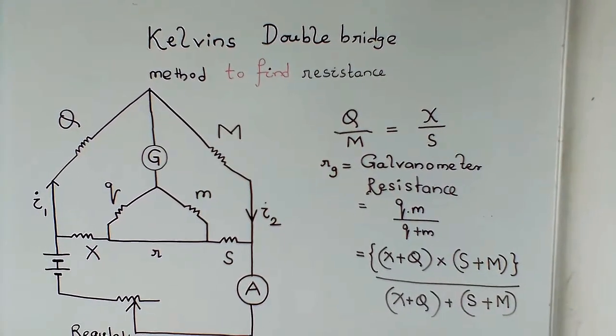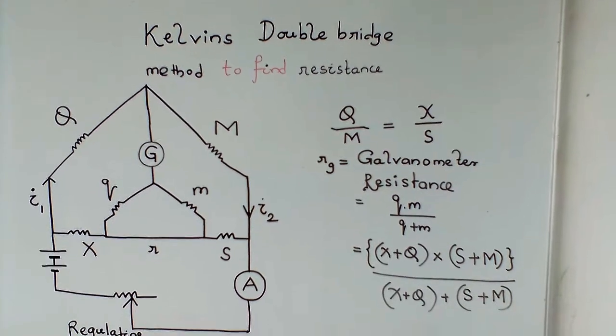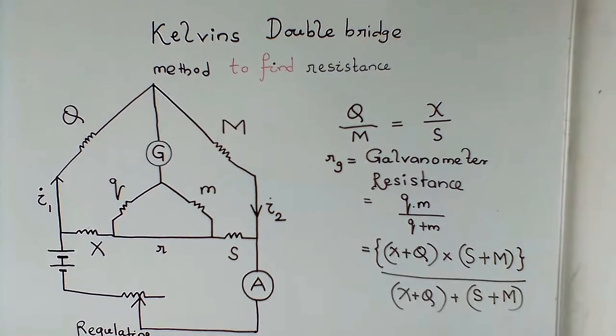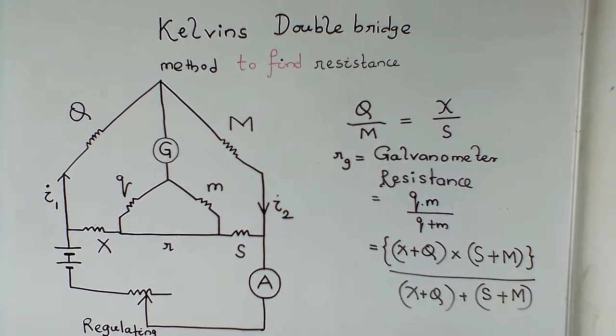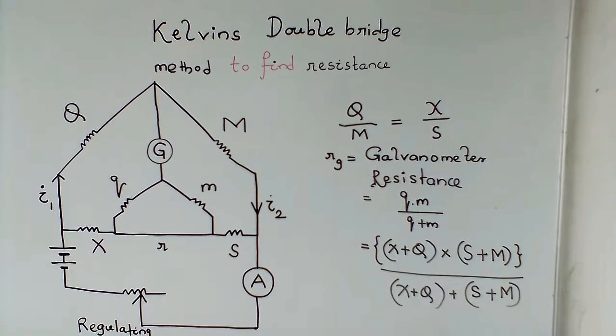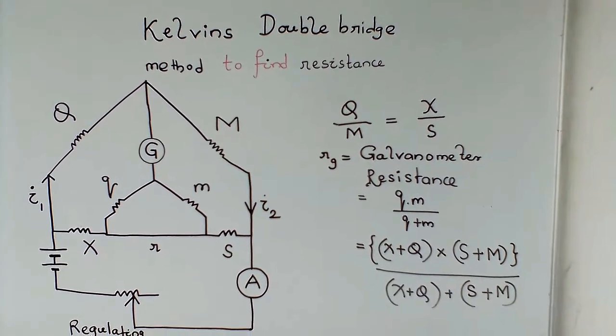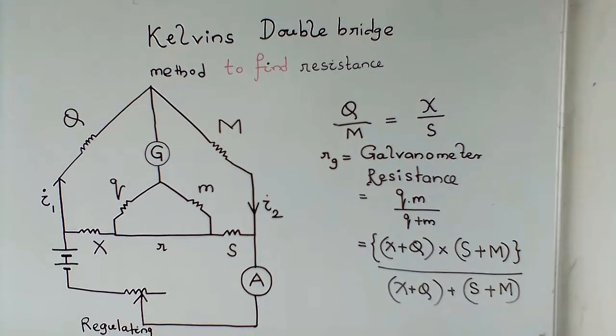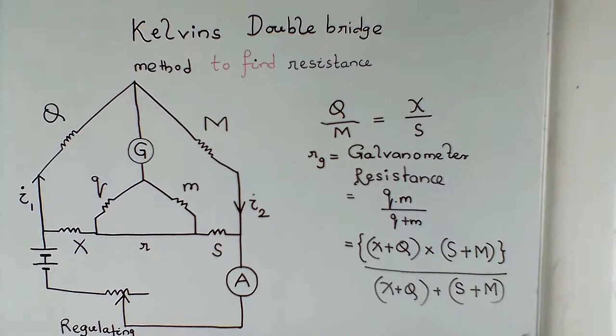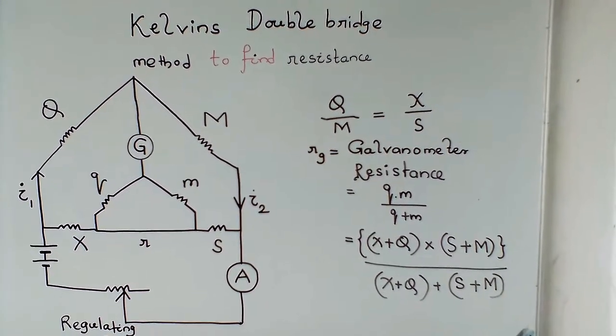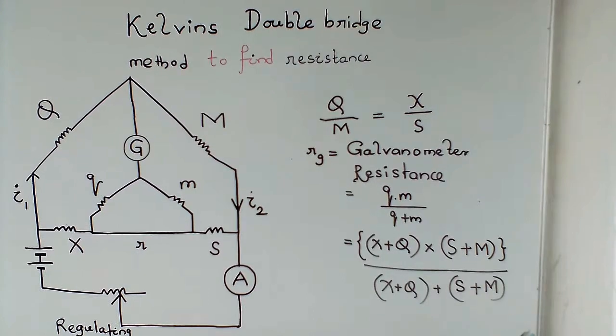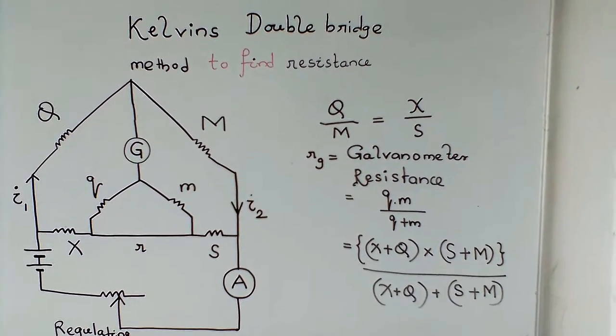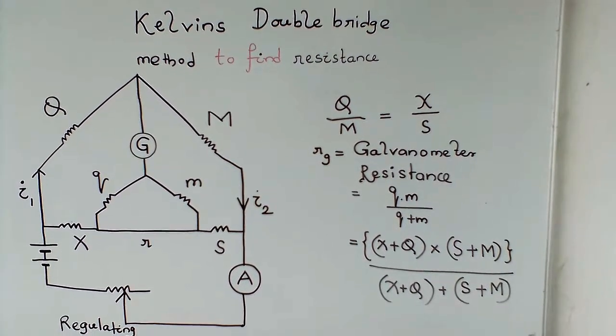As we know, there are three types of methods to measure low resistance: potential connection method, ammeter voltmeter method, and Kelvin's double bridge method. Among these, Kelvin's double bridge method is very popular and accurate. If the accuracy is 1%, it's still a good thing for measuring instruments from an accuracy point of view.